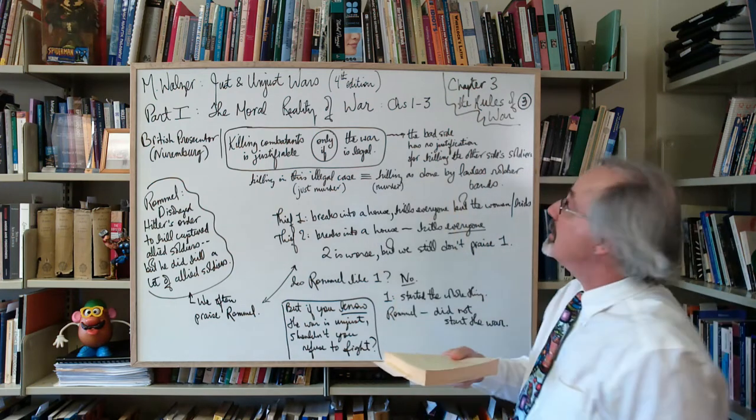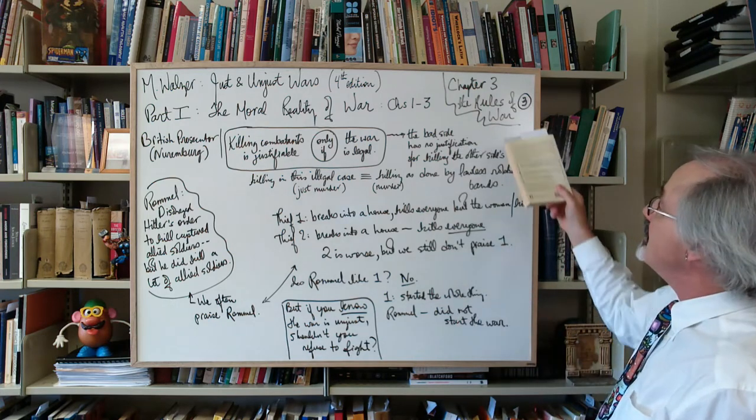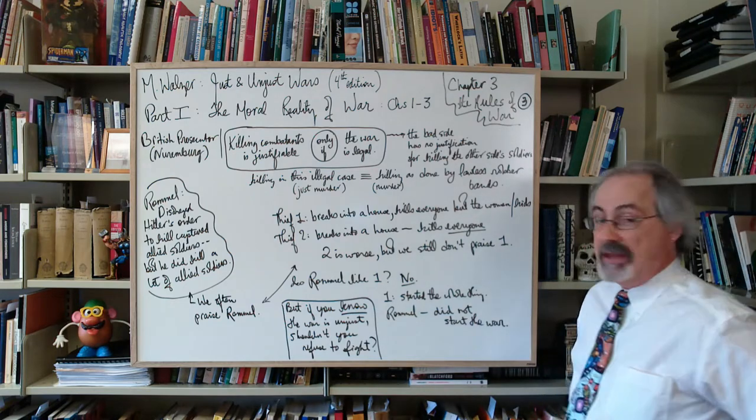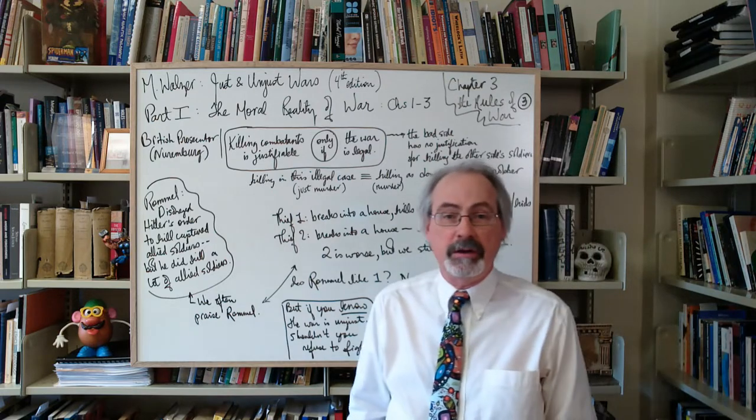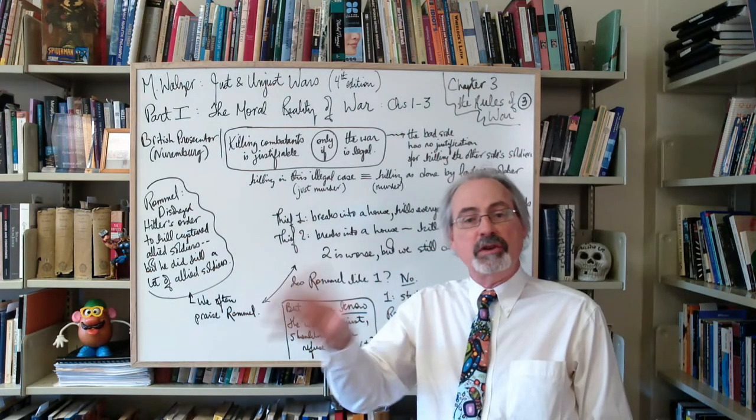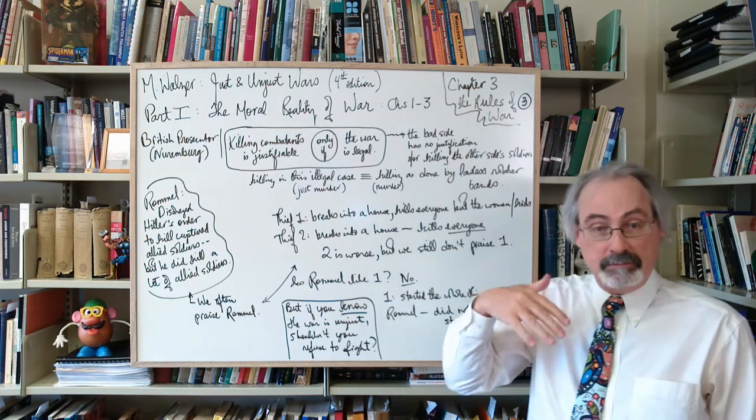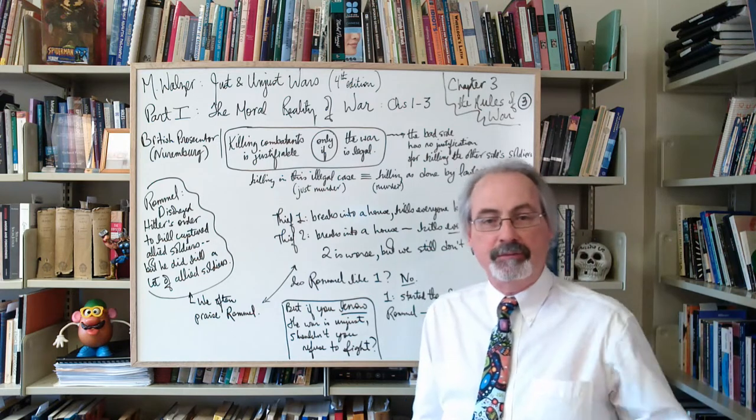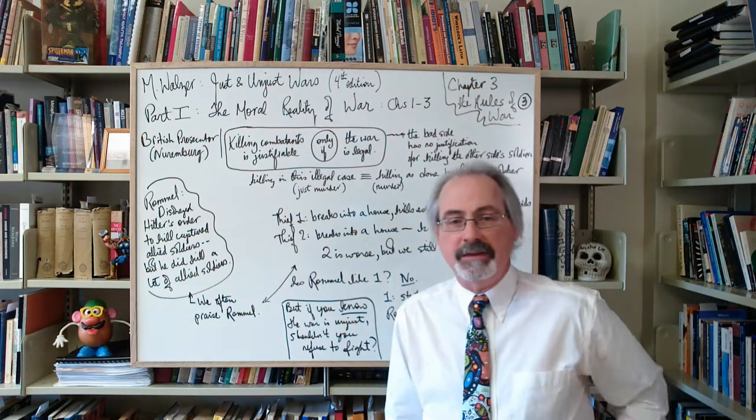So, still in chapter three of this book, I'm in the third video. This is going to be just a comment on something I've talked about before, namely that the distinction between jus ad bellum and jus in bello is quite controversial—this distinction between justice for war and justice in war.